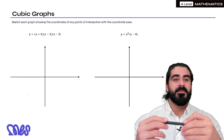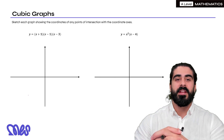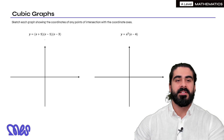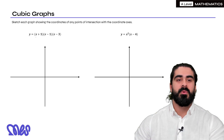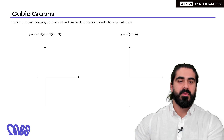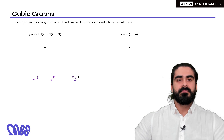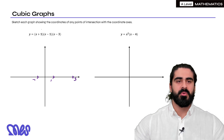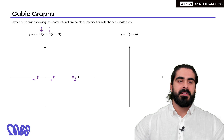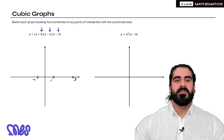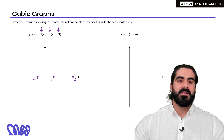We're going to start off with cubic graphs. Sketch each graph showing the coordinates of any points of intersection with the coordinate axes. Just like with quadratics, when we find the roots we want to factorize. Here we already have factorized cubics. So x plus one means it crosses the x-axis at minus one, x minus one means it crosses at one, and x minus three means it crosses at three. To work out where it crosses the y-axis we make x equals zero, so we'd be doing one times minus one times minus three, which gives you three. So it crosses the y-axis at three.